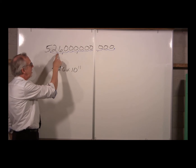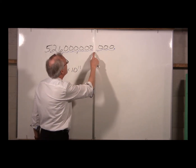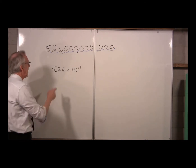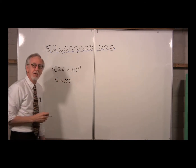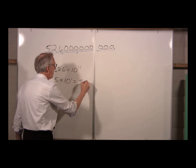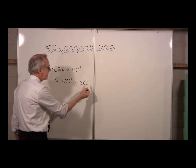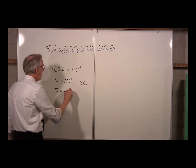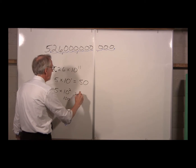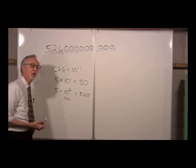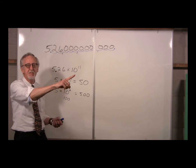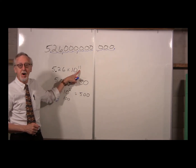The exponent tells us how many places we would move that decimal point to get it back to the original size - 11. So 5.26 times 10 to the 11th, moving it 11 places. Why does that work? Think about 5 times 10 - that's 50, like moving the decimal point one more place. 5 times 10² is 5 times 100, which is 500 - moving the decimal point two places. So the power of 10 tells us the number of places to move the decimal point to the right if the power is positive.